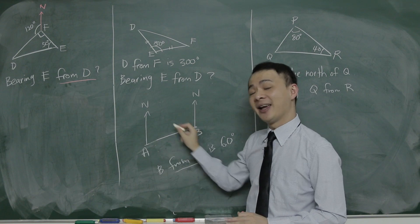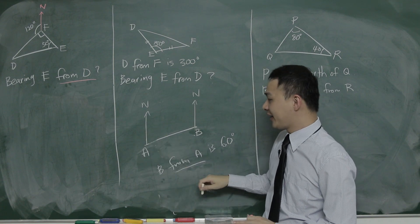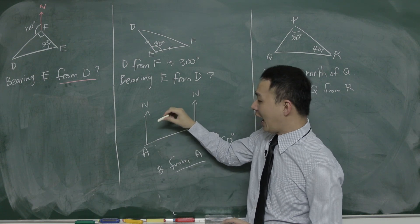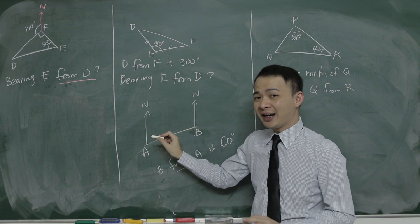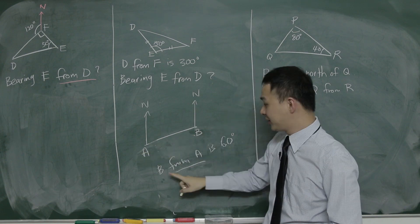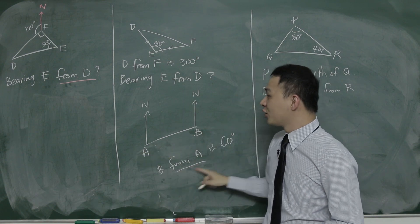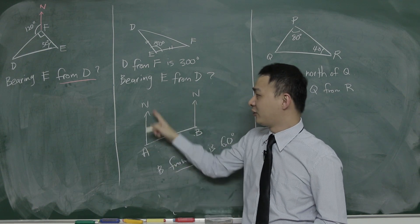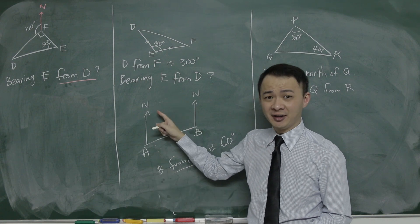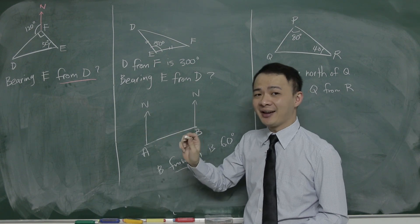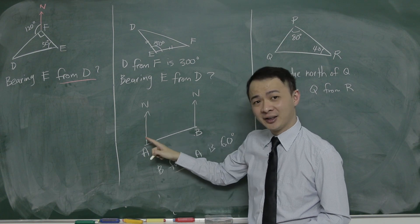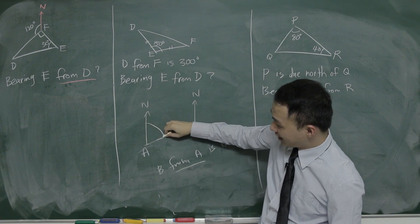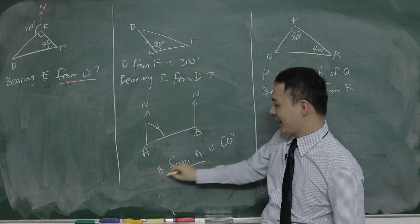When the angle is from A, bearing has some rules. First, you have to have a north line here. Second, when you read the angle, it must start from the north line and rotate clockwise. Clockwise must be in this direction — when you touch the line AB, you stop.